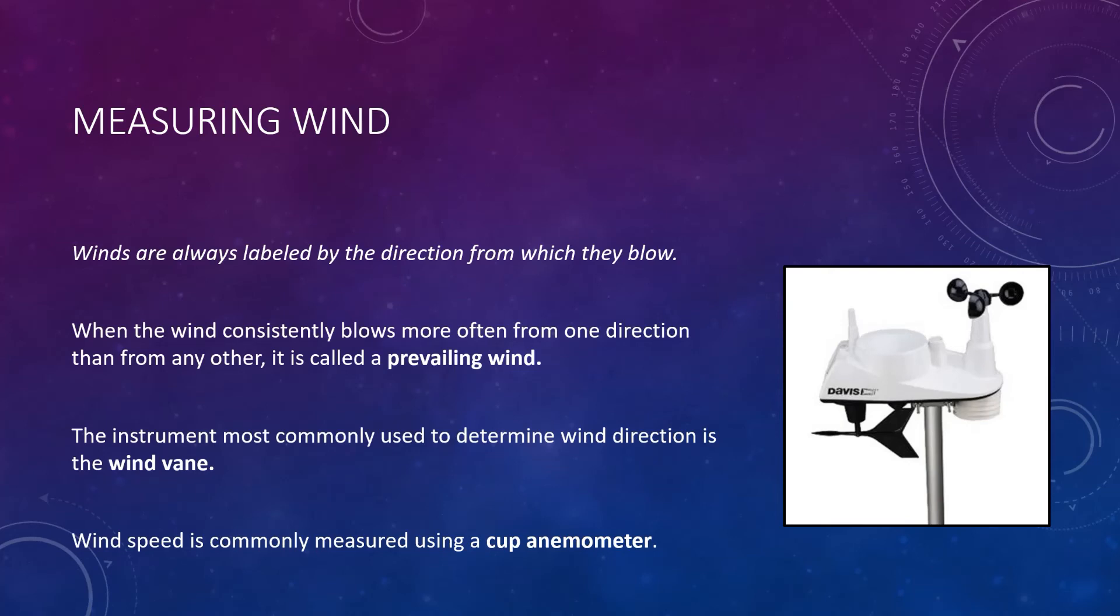So note that winds again are always labeled by the direction from which they blow. So if we say the wind is north, that means it's coming from the north, not that it's blowing toward the north. When the wind consistently blows more often from one direction than any other, it is called a prevailing wind. The instrument that is commonly used to describe wind direction is the wind vane, which you see on the bottom of this instrument here. So this guy will spin around with the direction of the wind and point it out. Wind speed is typically measured using a cup anemometer, which you can see at the top here. So this picks up the wind and it moves faster with the stronger wind, and this shows direction. Note that this is just one random example of a device that measures these things. There are many ways for these to be measured.